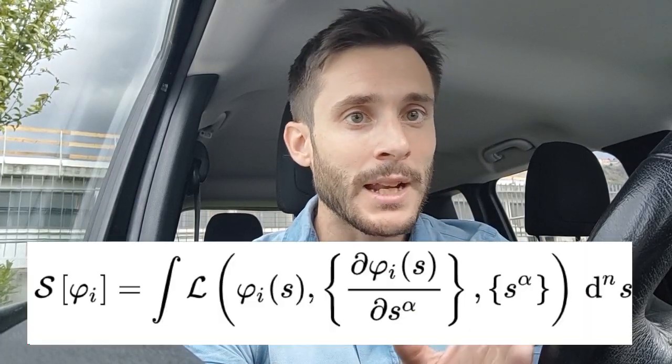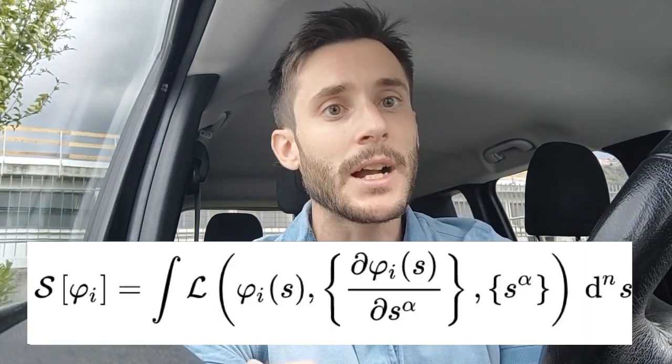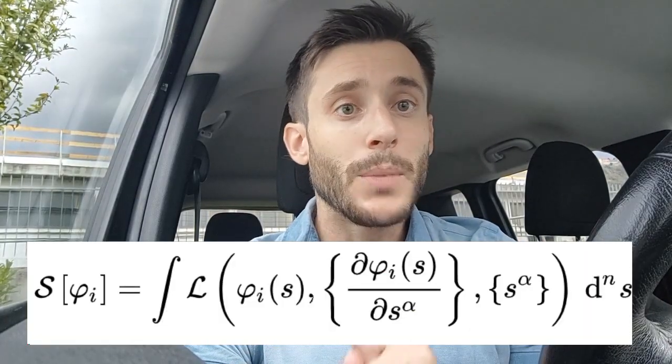But with path integrals you change your perspective. We don't start from a field and quantize it. Rather, we start from an action, or in particular a Lagrangian — so from a Lagrangian we define the action — but we do so in a different manner with respect to the classical theory of fields.